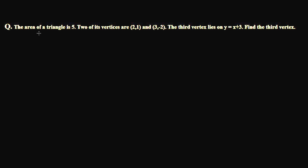Here we're going to solve a very interesting question based on the area of a triangle. The question is: the area of a triangle is 5, and two of its vertices are (2, -1) and (3, -2). The third vertex lies on the line y = x + 3. Find the third vertex.